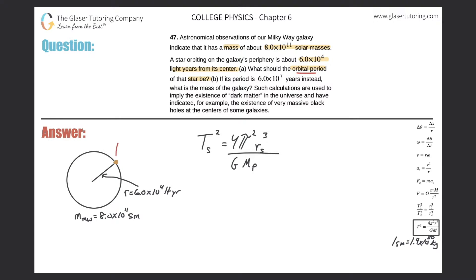In order to use this formula to help us solve for the orbital period, we have to talk about what's the satellite and what's the parent system. Remember, satellites are basically considered orbiting objects that orbit around a parent system. So in this particular context, here's the star of interest that's orbiting. It's going around on this circular orbit and it's rotating about the center of the Milky Way galaxy. So the Milky Way galaxy would be considered the parent system.